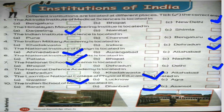Number five: the National Institute of Design is located in Ahmedabad. So, write Ahmedabad in the blank table of serial number five. The National Institute of Design is located in serial number six.